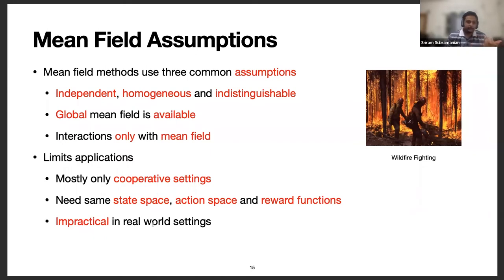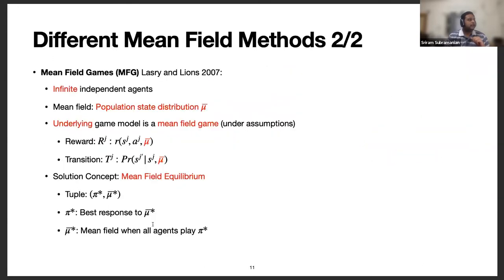These three assumptions, especially the first two, can be seen as limiting applications of mean field learning. First, we can only use mean field learning in cooperative settings, because agents must share global information, and homogeneity means agents must have the same goal. For example, in wildfire fighting, each firefighter is tasked with a different objective in space — they don't share objectives. That's one example where all of these assumptions fail. Typically in mean field games, agent indices are dropped across the board because agents are indistinguishable.